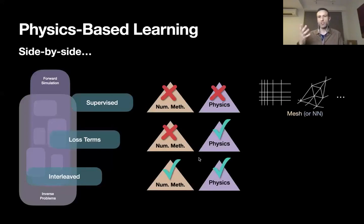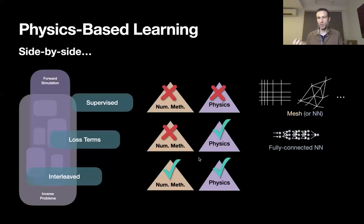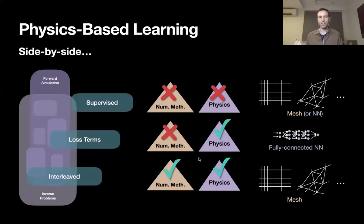Briefly comparing the different approaches: with the supervised approach, we cannot easily use any numerical methods — it's just based on data, no model behind it. With the physics-informed approach with additional loss terms, we can make use of the model in training, but because this typically uses neural networks to formulate the PDE, it prevents us from using a large portion of numerical methods that don't work with neural networks. With the differentiable physics approach, we rely on a full regular solver both for predictions and for getting training information — so we can actually use the existing numerical tools we have.